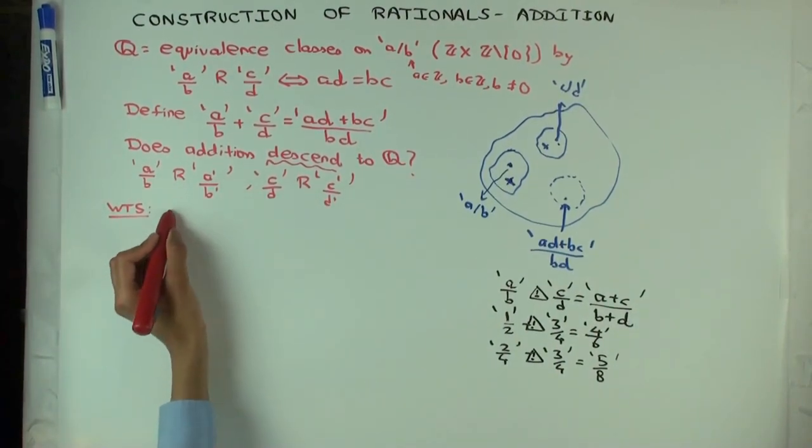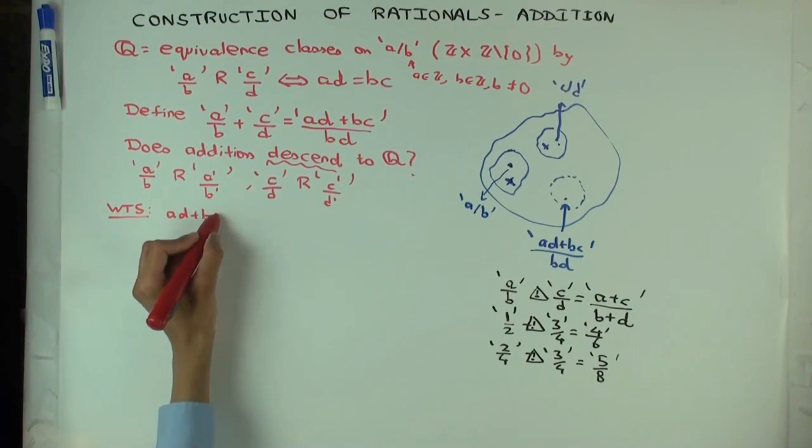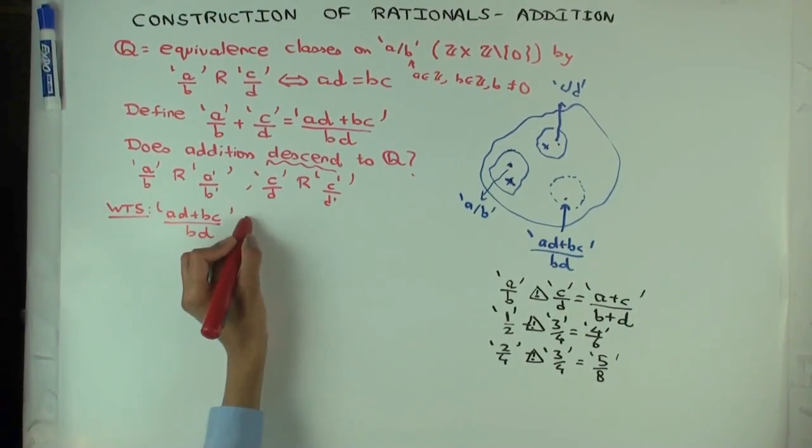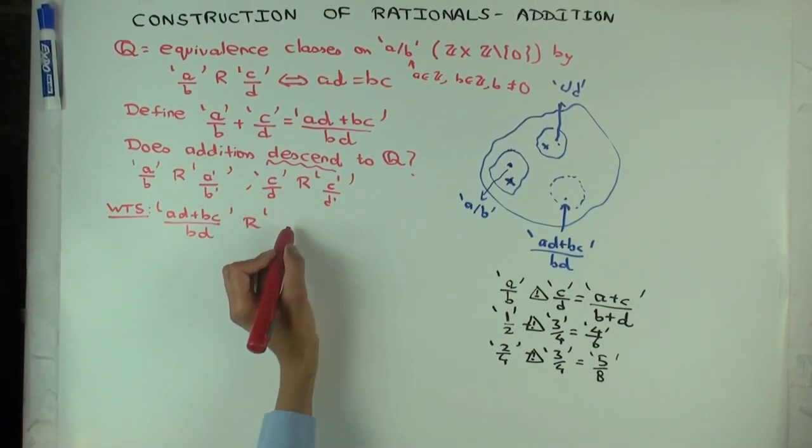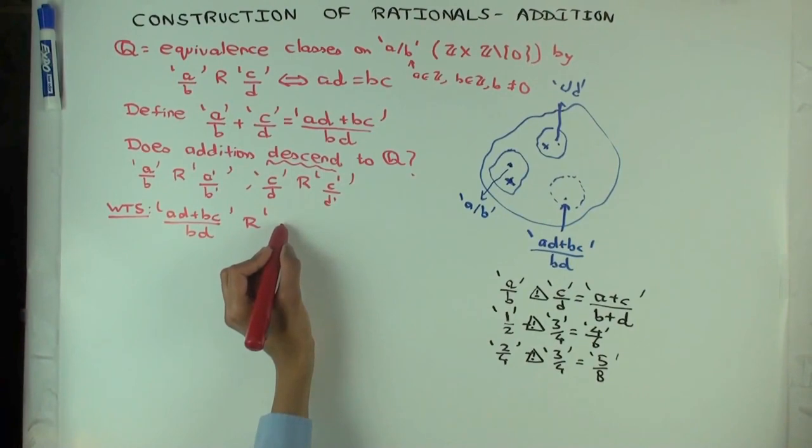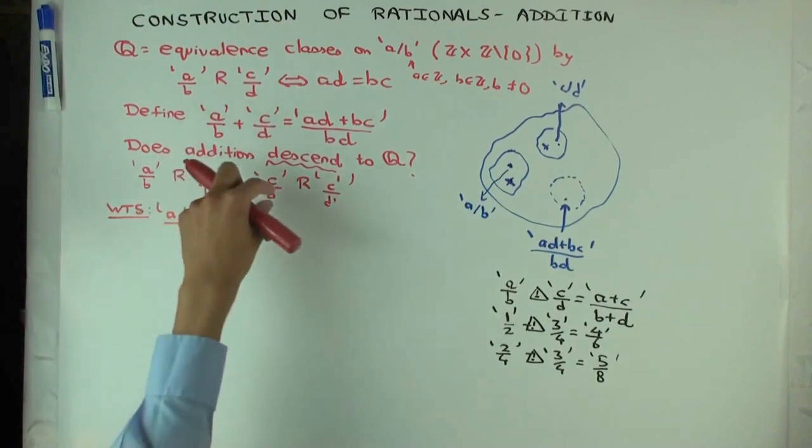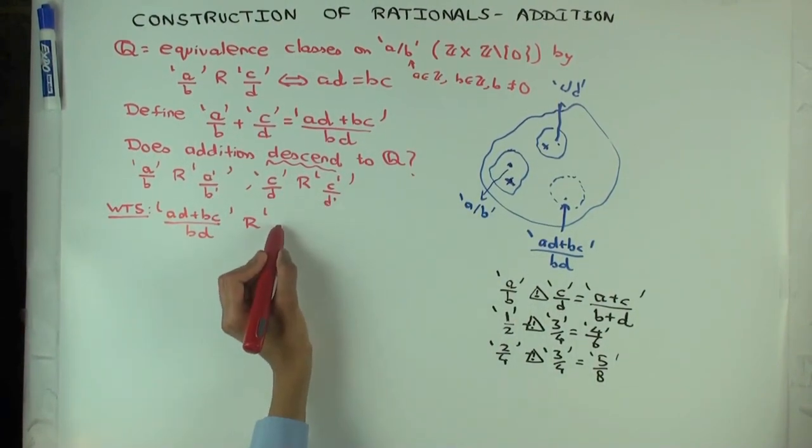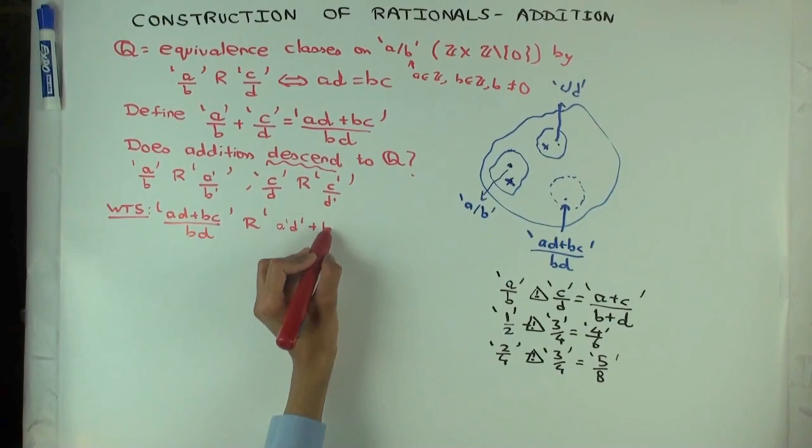We want to show that ad plus bc over bd is related to what? If you use the prime ones, what will you get? So if instead of adding a over b and c over d, I add a prime over b prime and c prime over d prime, what should I get here? All the prime, a prime d prime plus b prime c prime over b prime d prime.